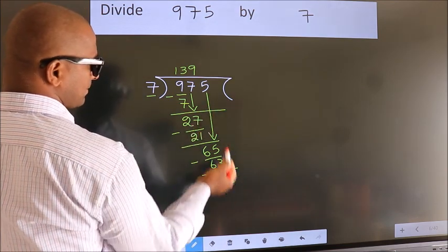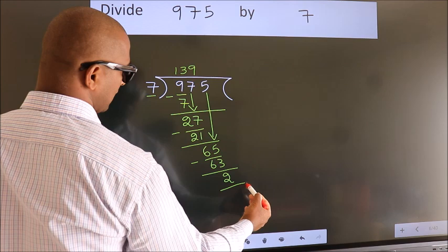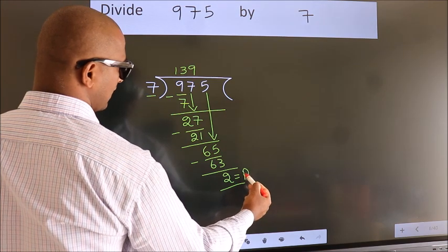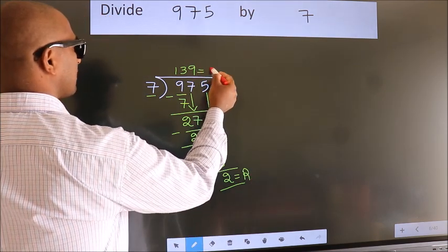No more numbers to bring it down. So we stop here. This is our remainder. This is our quotient.